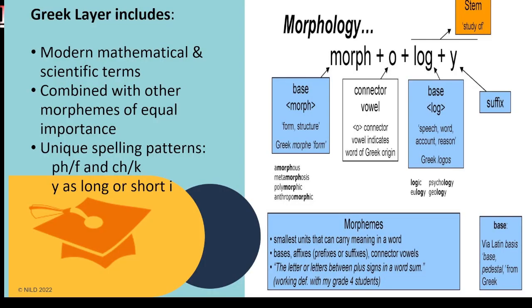Let's look at the Greek layer. Modern scientific and mathematical terms incorporated into English in the past 500 years have most often been constructed from Greek morphemes. Greek-derived morphemes are not necessarily assigned specific roles as prefixes, suffixes, or roots — they can be combined with other morphemes of equal importance, such as telescope, hemisphere, autograph, and polygon. There may be two word parts with no accented syllable. Other Greek morphemes include chrom, cycle, and therm. Unique spelling patterns include PH making the F sound, CH making the K sound, and Y as a long or short I sound.